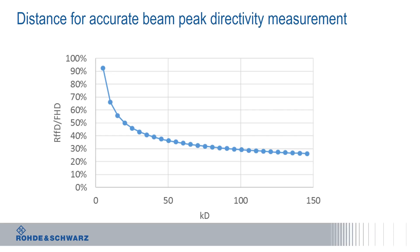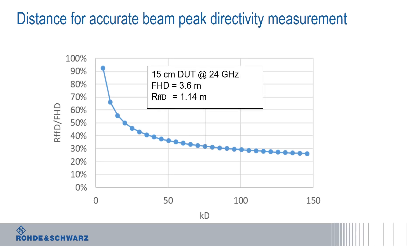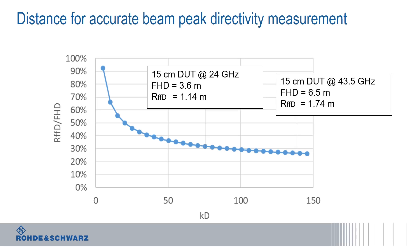The far field conditions are actually achieved at an earlier distance, and our theoretical results prove that, especially if you look at peak beam directivity. For a DUT of 15 cm size like a smartphone radiating at 24 GHz, applying the Fraunhofer distance gives 3.6 meters for OTA testing. But we found that 1.14 meters would be enough to assess peak beam directivity with a maximum 0.5 dB error. Conducting the same exercise at 43.5 GHz, the Fraunhofer distance gives 6.5 meters, but we could measure at 1.74 meters if only interested in peak beam directivity.